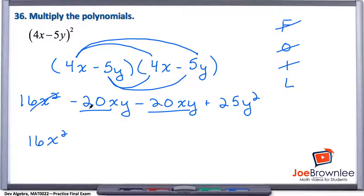We'll combine our middle terms. So a minus 20xy minus 20xy. Well, that gives us a minus 40xy.